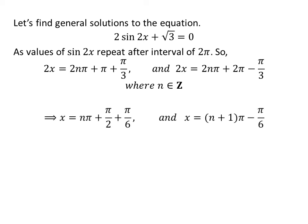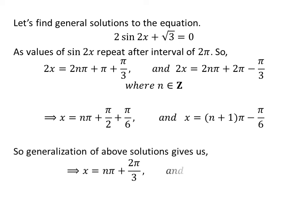Division of both equations and further simplification gives us the general solutions: n times pi plus pi upon 2 plus pi upon 6, and n plus 1 times pi minus pi upon 6. Further simplification gives the general solutions as n times pi plus 2 times pi upon 3, and n times pi minus pi upon 6, where n is an integer.